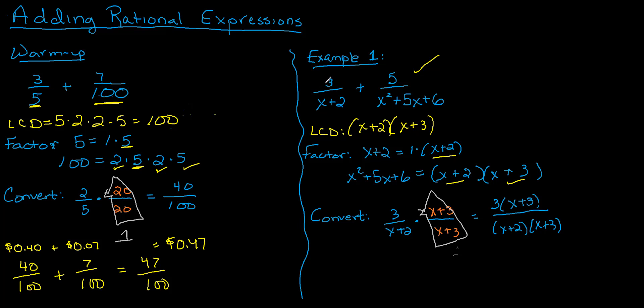Our first fraction, new and improved, instead of 3 over x plus 2, I've got 3 times x plus 3 over my LCD, plus the second fraction that was already looking great. I'll write the least common denominator in its factored form. That way, it's really obvious to my eyes that I'm adding two fractions that do have the same denominator.